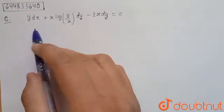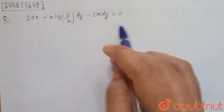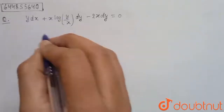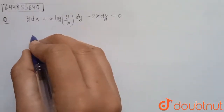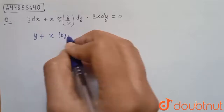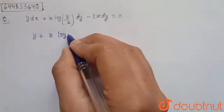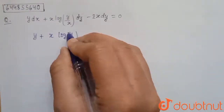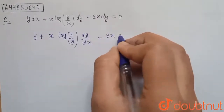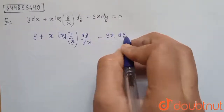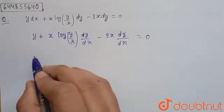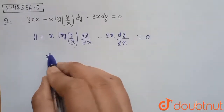In this question we have been given a differential equation and we have to find the solution. We can write this equation as: y plus x log(y/x) times dy/dx minus 2x times dy/dx equals zero.